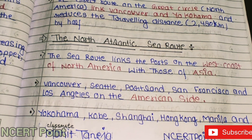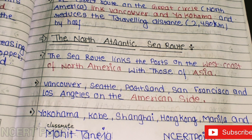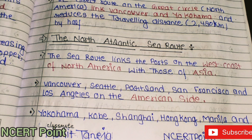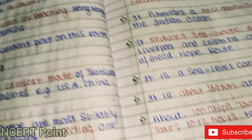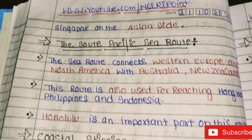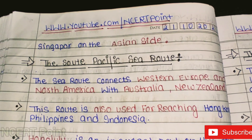The North Pacific Sea Route links ports on the West Coast of North America with those of Asia. On the American side: Vancouver, Seattle, Portland, San Francisco, and Los Angeles. On the Asian side: Yokohama, Kobe, Shanghai, Hong Kong, Manila, and Singapore.